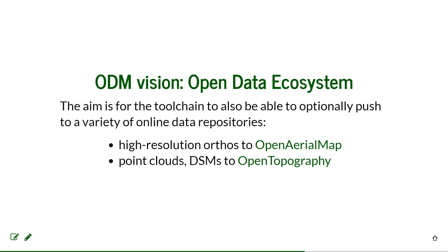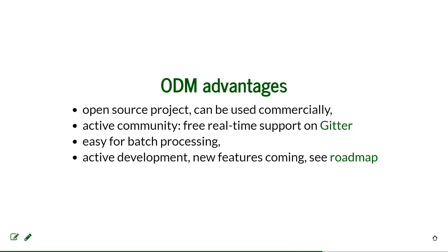I think OpenDroneMap is a good example of an open source project because it has brought together a community of people who want to collaborate. The community is very active and wants to contribute to other parts of the open source geospatial world, such as OpenAerialMap, so that people can send their orthophotos to an open repository. They also integrate with OpenTopography. It's open source so it can be used commercially, and you can get real-time support on Gitter.